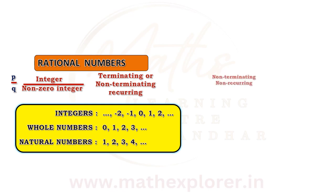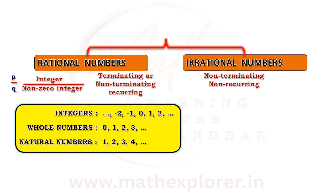Further, the numbers whose decimal representation is neither terminating nor recurring are called irrational numbers. All the rational numbers and the irrational numbers together form the collection of real numbers.